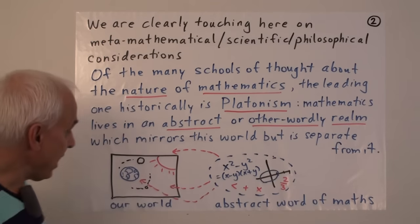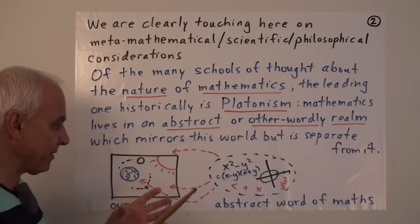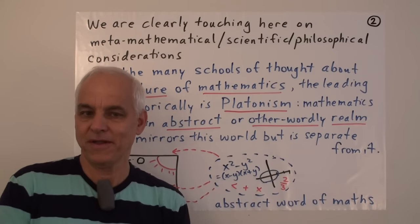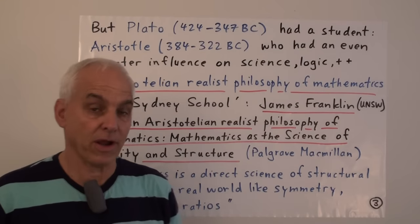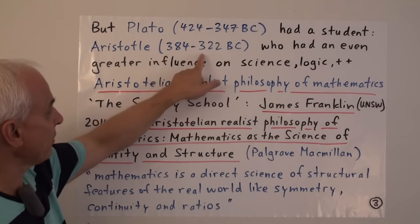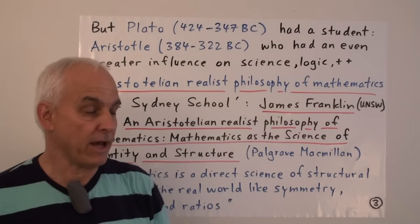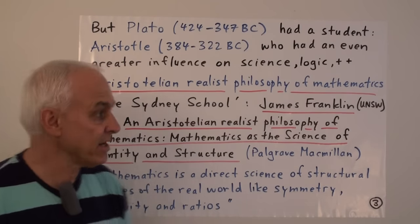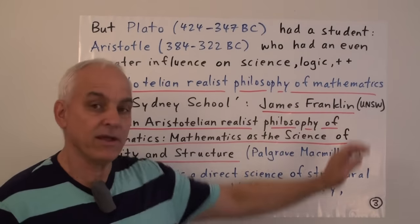There's a mysterious and beautiful connection between this abstract world of mathematics and our own very concrete world. This is a very familiar and natural view, and one I have a lot of sympathy with. But this is not the only possible point of view. Platonism is named after Plato, the great Greek thinker, who lived from 424 to 347 BC. His student Aristotle, 384 to 322 BC, perhaps ultimately had an even greater influence on science and logic. In recent years, an Aristotelian realist philosophy of mathematics has been developed by the so-called Sydney School, led by James Franklin, my colleague at the University of New South Wales.